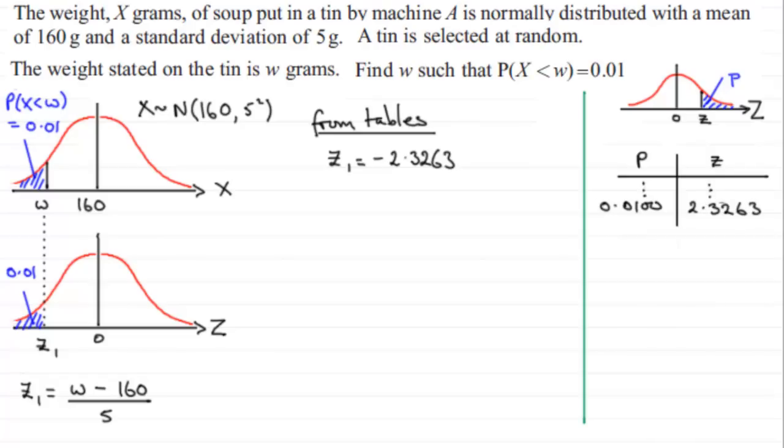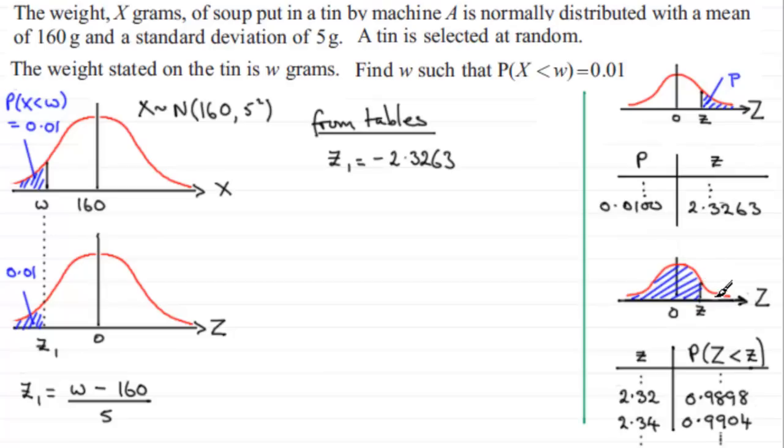So how else could I have got this value? I could have got it through using the other sets of tables, just the normal tables, where they gave probabilities being less than a given value of Z. Now if we're working from these tables, I know that if I was to mirror this to the other side, this area would be 0.01, but the area then to the left of it would be 0.99. If this white patch here had an area of 0.01, this blue area would be 0.99 in area. The probability then of Z being less than little z would be 0.99.